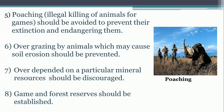Number seven: over-dependence on a particular mineral resource should be discouraged. Some countries depend on crude oil as their main source of revenue; looking for other alternatives will help protect such a country's economy. Additionally, game and forest reserves should be established — places where animals are kept, like a zoo — so that people can go there for sightseeing, touring, and research.